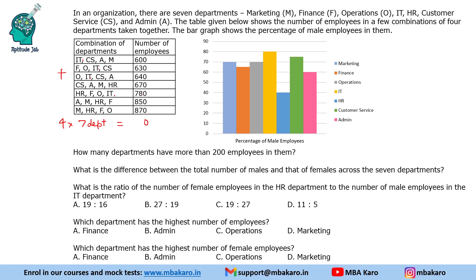Adding up all the values: 7, 14, 22, 27, 34... carrying 3, giving us 5040. So four times the total number of employees is 5040. Dividing by four gives us 1260. So there are a total of 1260 employees across all seven departments.